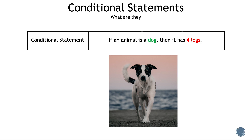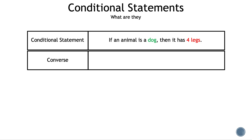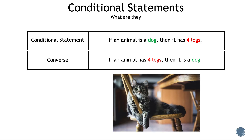The next statement we're going to introduce is converse. With converse, we switch the hypothesis and the conclusion. The converse statement is: if an animal has four legs, then it is a dog. This is not always true — for instance, a cat is a counter example for this converse statement.